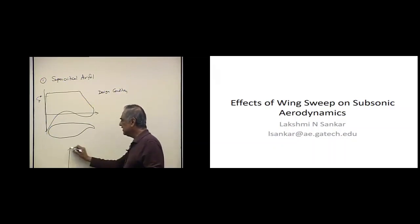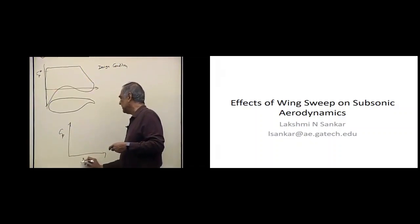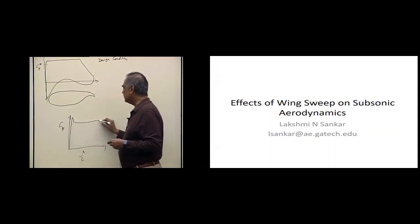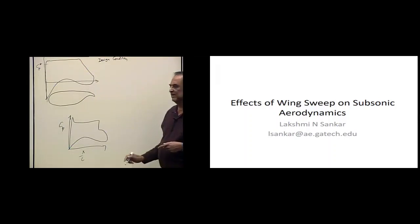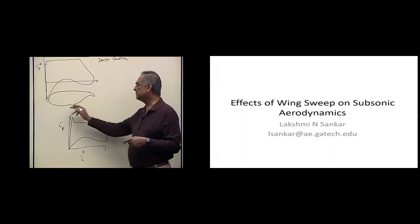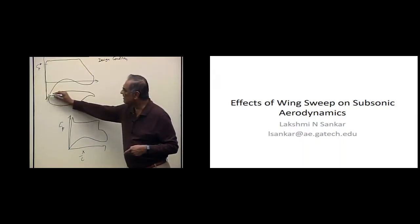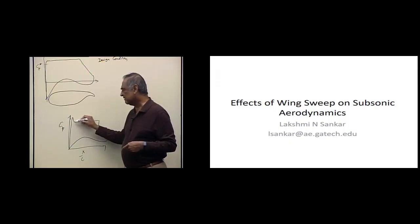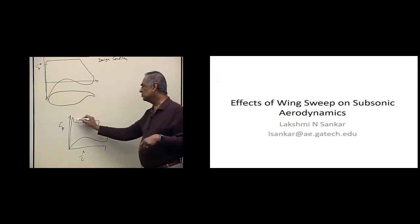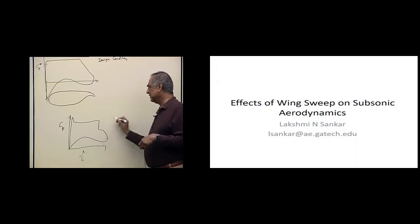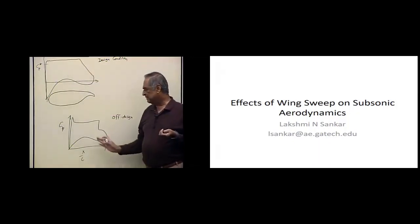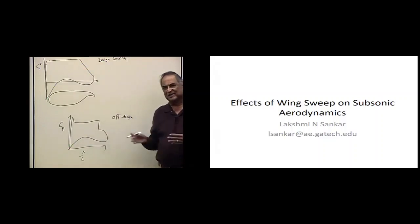In an off design condition, what you would see is CP versus X over C. You may get a shock near the leading edge, you may get another shock near the trailing edge, but most of it would be similar in shape. You may get a small near leading edge shock because of the bluntness of the flow. In those flow accelerates supersonically, then decelerates, then stays supersonic to supersonic shock, then stays supersonic, then supersonic to subsonic shock, then it will come back down here. This may occur in off design condition.